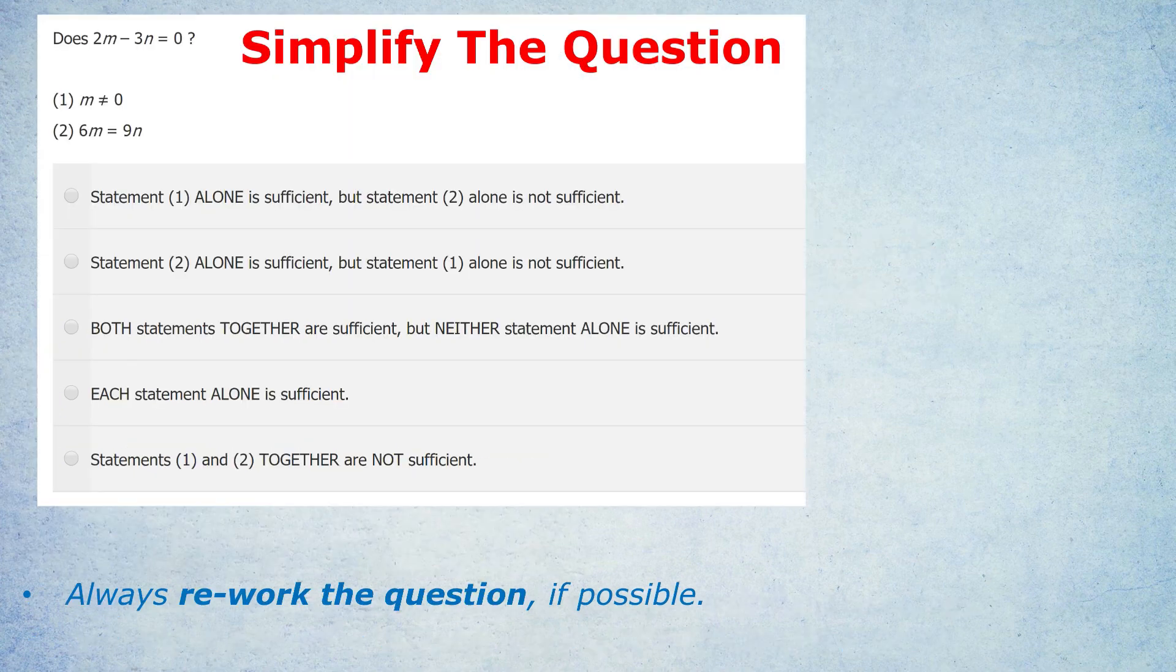Contradictory answers, as in statement 1, mean insufficient. Consistent answers, as in statement 2, mean sufficient, regardless of whether the answer is no or yes. And that covers two of the core fallacies I see all the time with students trying to understand data sufficiency. I could just end the video there because that's such an important set of lessons. But I thought I would give you two more quick tips about data sufficiency.